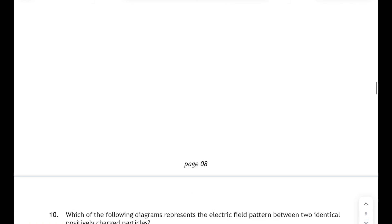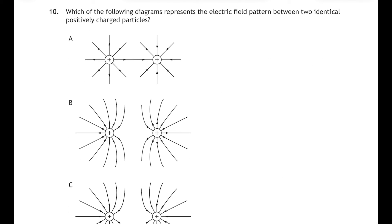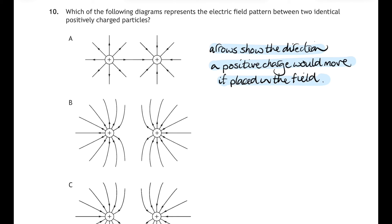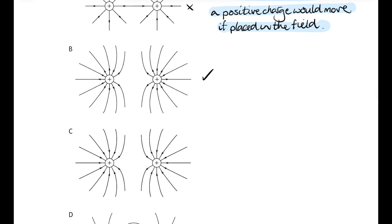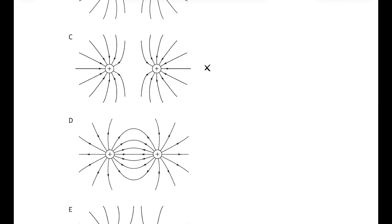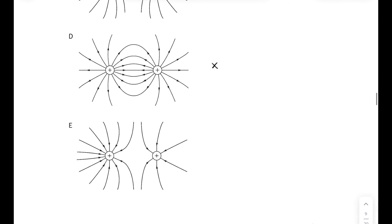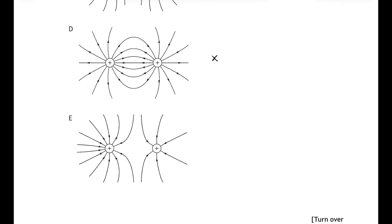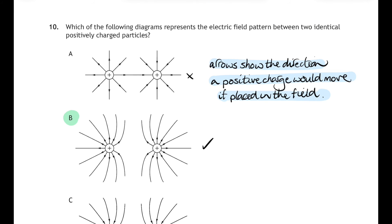Question 10, this is electric fields. Which of the following diagrams represents the electric field pattern between two identical positively charged particles? Well the thing to remember here is that in electric field diagrams the arrows show the direction that a positive charge would move if it was placed in the field. So because we've got two positive charges here, these arrows should always be pointing away from each of the positive charges. So A is incorrect. B is looking pretty good, it's a repulsive field - those charges repel each other. C we've got arrows going towards one of the charges. D is an attractive field and these charges are not attracting each other, so D is incorrect. And E has got arrows pointing towards the charges again. So the only one that's correct is answer B.